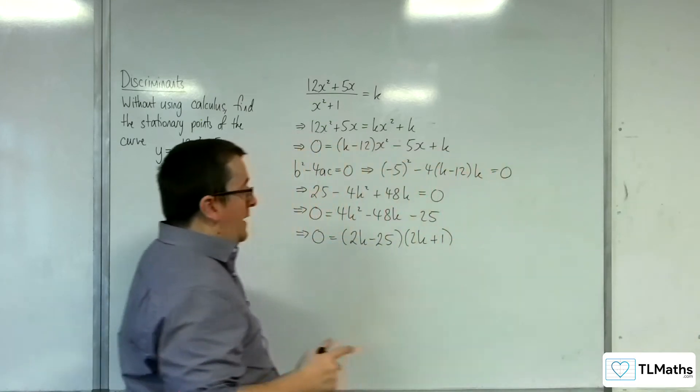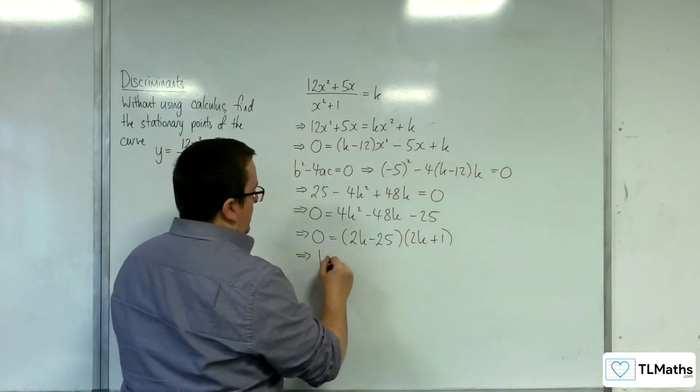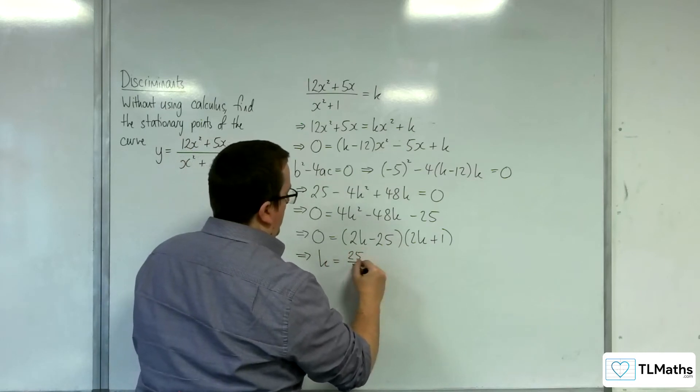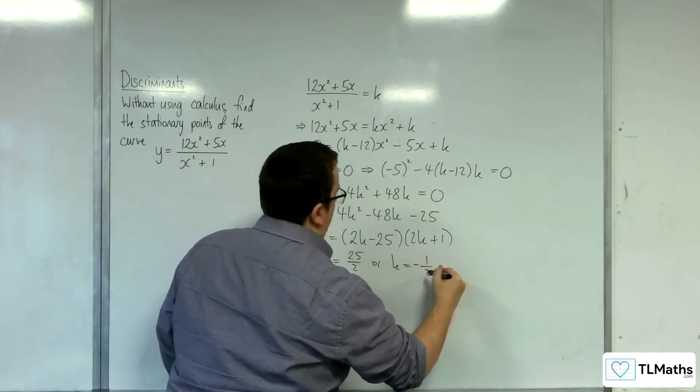So, we've got two values of k. k is equal to 25 halves, or k is equal to minus 1 half.